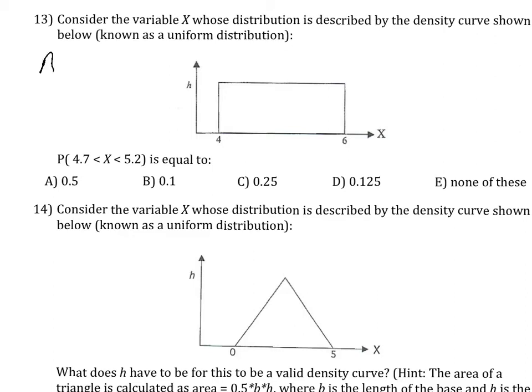The area of a rectangle we know is equal to the height times the width of the rectangle. We know that the area must be 1 or 100%. We don't know the height, but we do know the width.